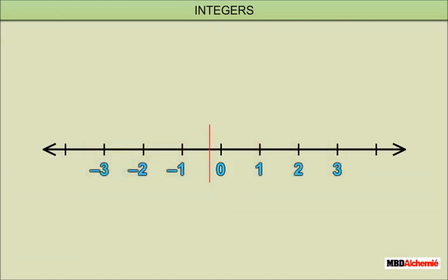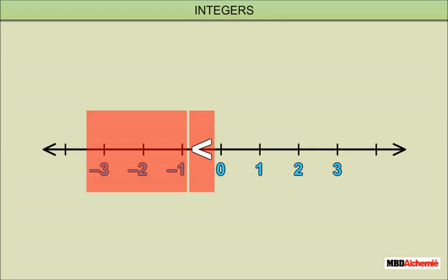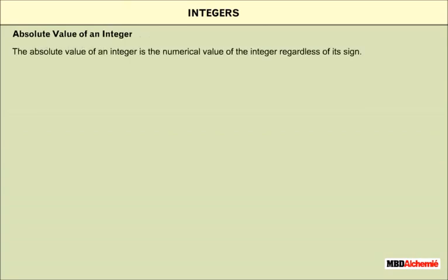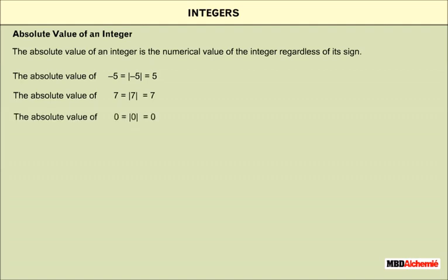Every positive integer is greater than every negative integer. Zero is smaller than every positive integer. Zero is greater than every negative integer. The absolute value of an integer is the numerical value of the integer — for example: the absolute value of minus 5 equals 5; the absolute value of 7 equals 7; the absolute value of 0 equals 0.